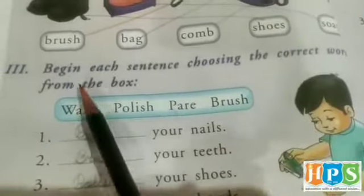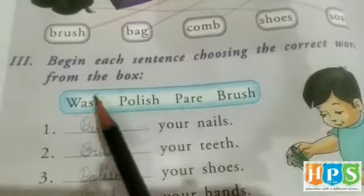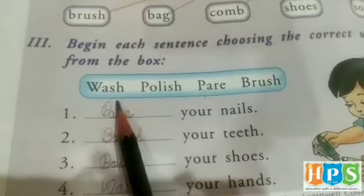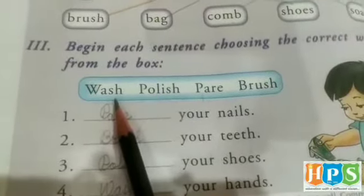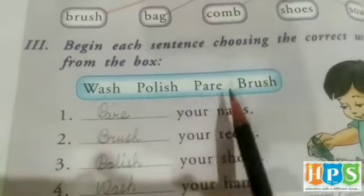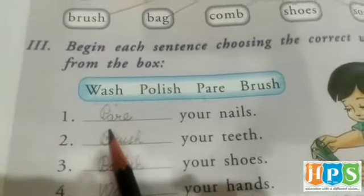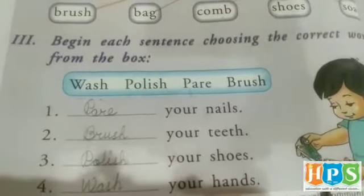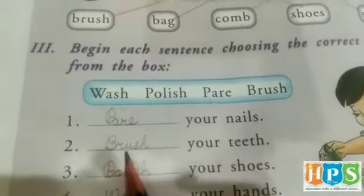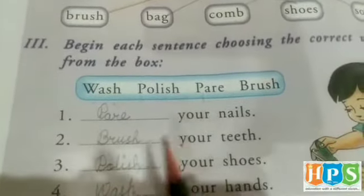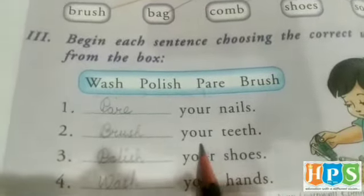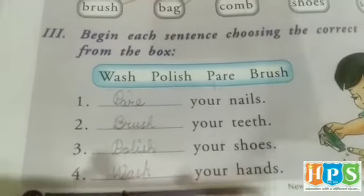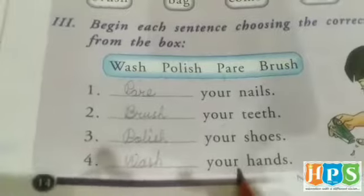Next we have: begin each sentence choosing the correct word from the box. Humare paas yahaan par kuch words hain in the box — wash, polish, pare, or brush. First mein aayega: Pare your nails. Apeni nails ko pare karna chahiye. Brush your teeth — we should brush our teeth everyday. Polish your shoes and wash your hands.